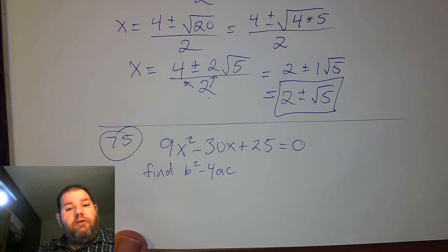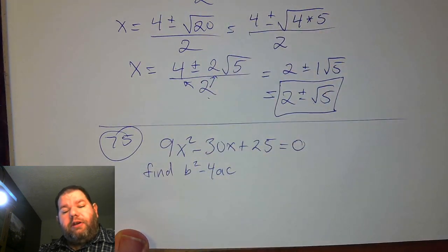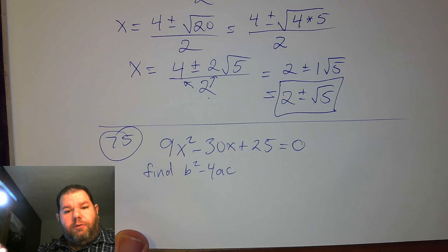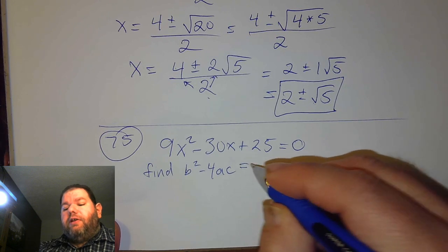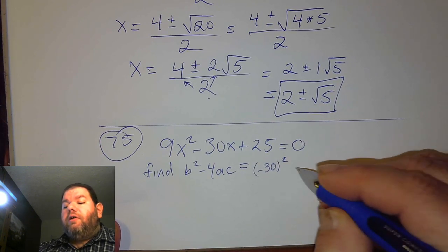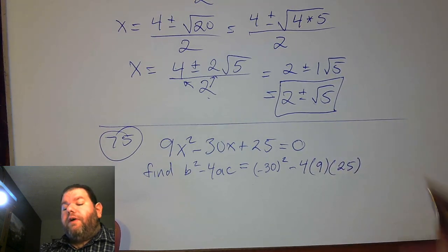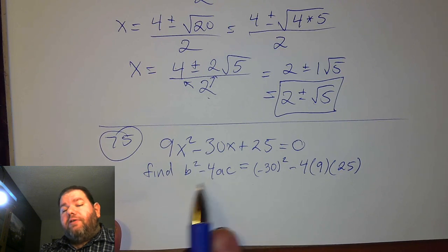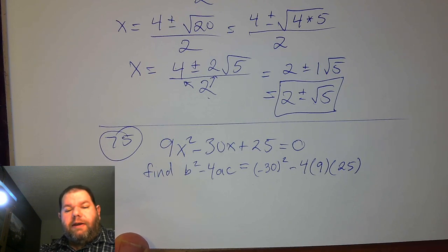We don't actually need to solve all the way for x, even though we could. We have to make sure we pay attention to the instructions. The b value is negative 30. Then minus 4 times a, which is 9, and c, which is 25. The discriminant is what's right underneath the radical in the quadratic formula. Its value — whether positive, zero, or negative — tells us the types of solutions to expect.